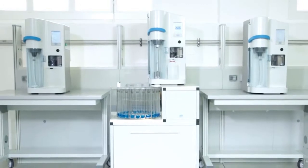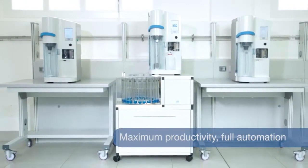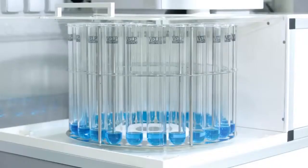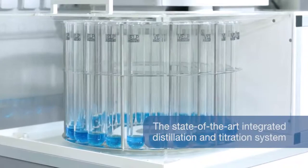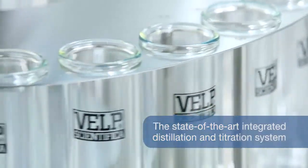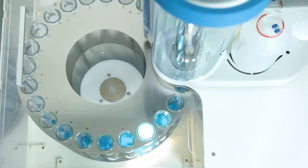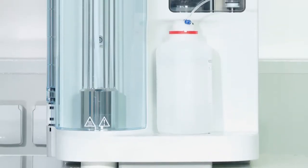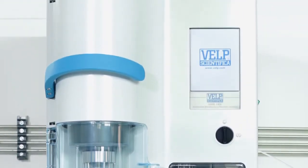The VALP UDK169 with AutoKiel AutoSampler ensures continuous operation and provides a simple and high-performance solution for safe and automatic distillation and titration. It achieves the most reliable results with colorimetric titration based on precise chemical reactions in Kjeldahl analysis.